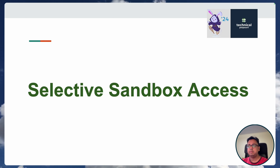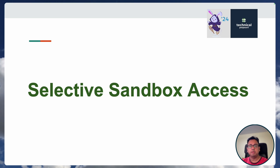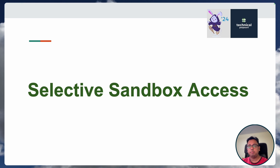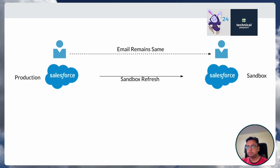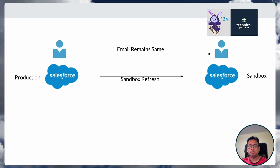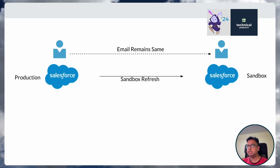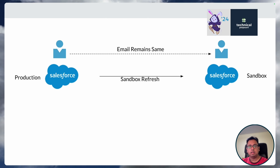The solution is Selective Sandbox Access. This is something coming up along with the Winter 24 release, and I'm going to show you what is going to happen when this is enabled in your production org. As you can see on screen, we create a sandbox refresh. The person who initiated the sandbox refresh will have their email remain the same on the sandbox — as of now, it's the same process.